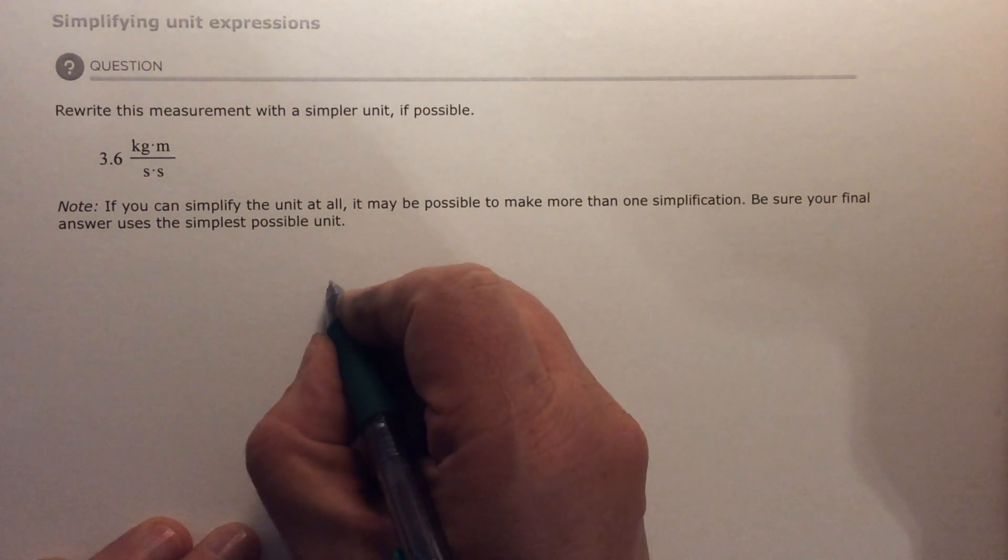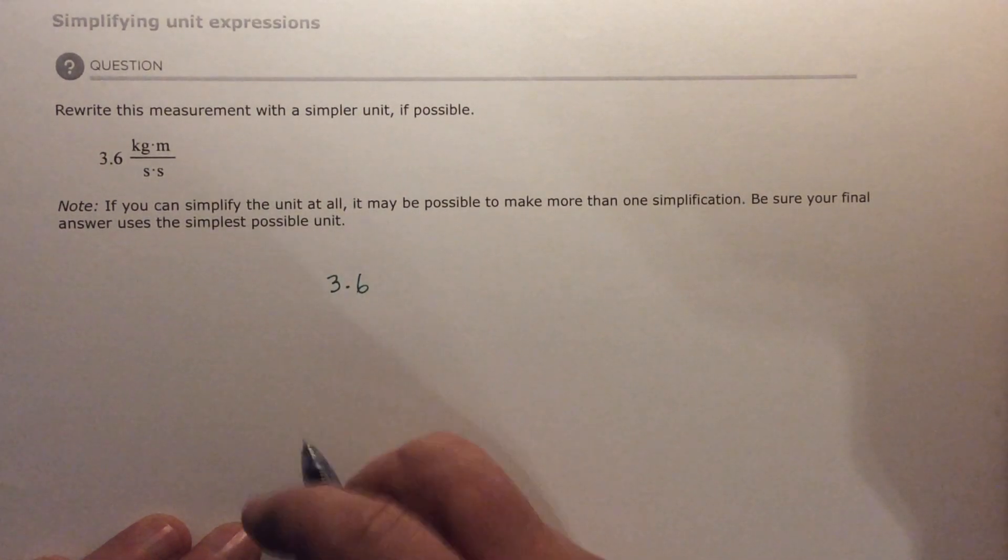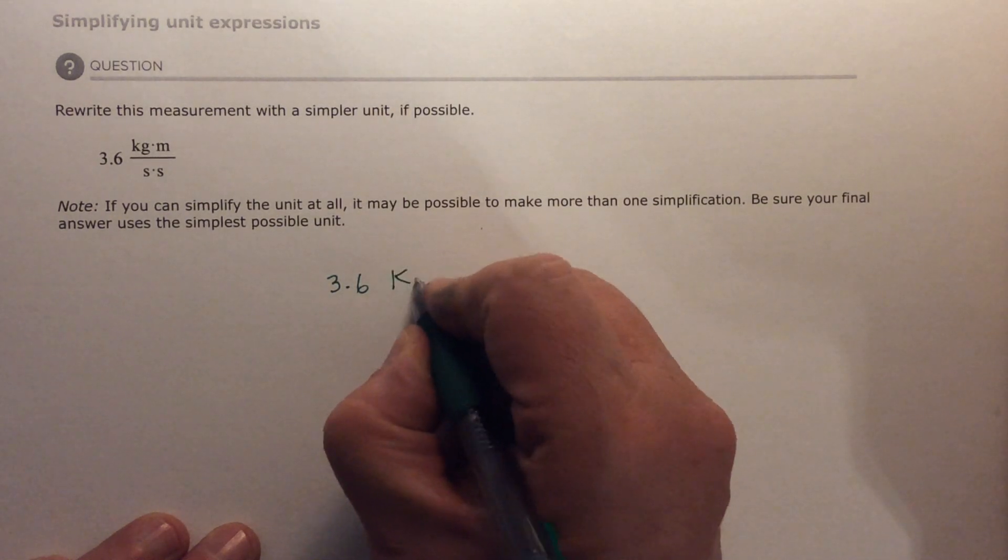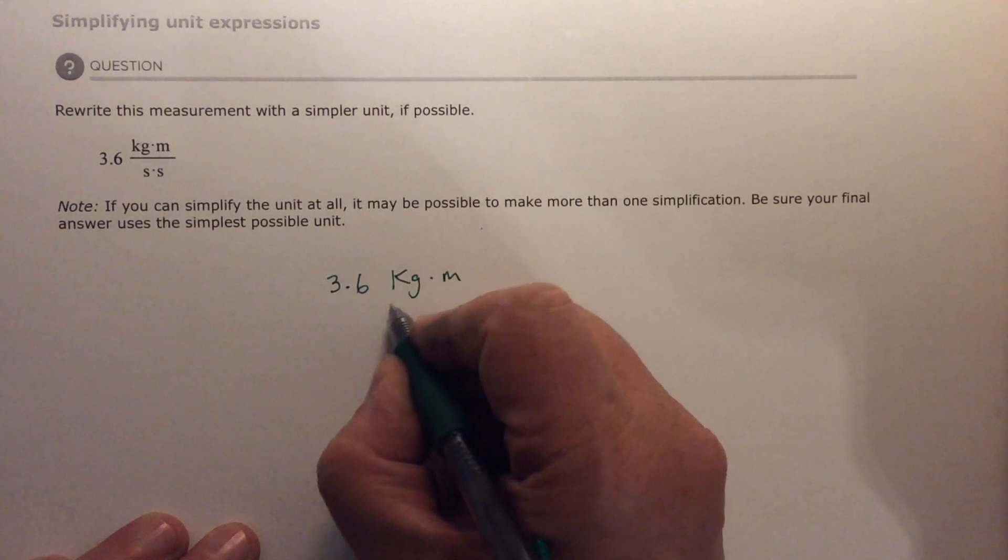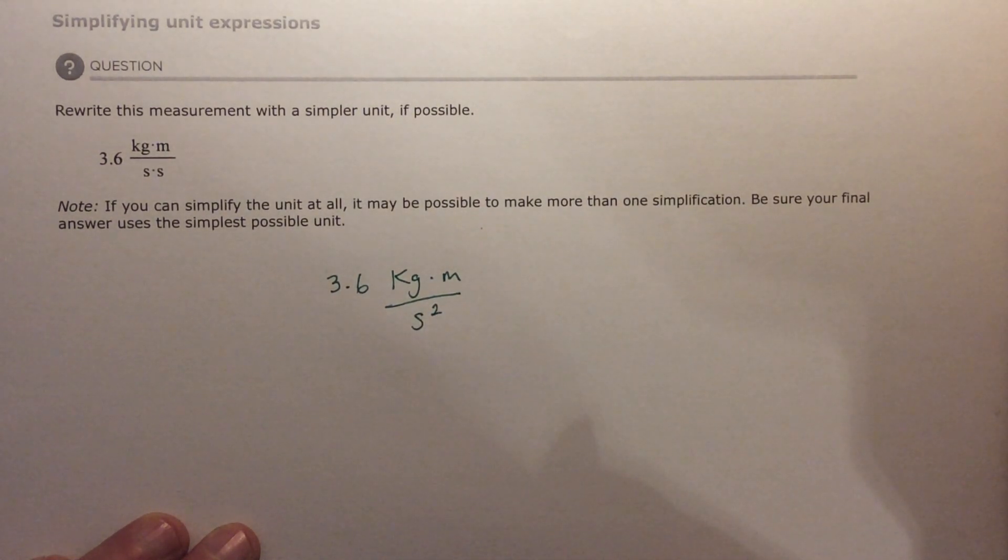So, if I were going to rewrite this, again, simple problem, I have 3.6. I'd leave it alone. Kilograms on the top, meter on the top, but then on the bottom, I would write square seconds. That's how I would do this problem.